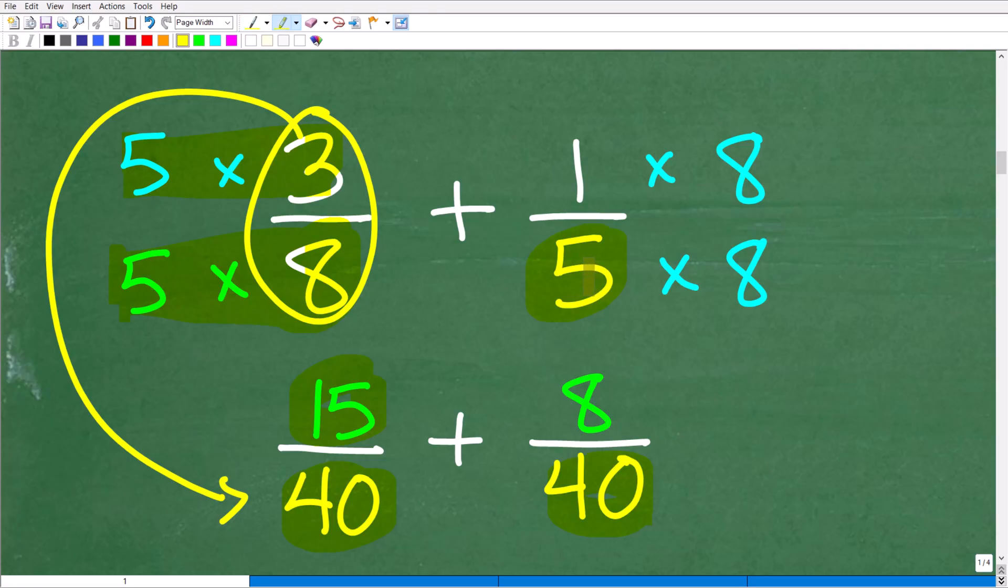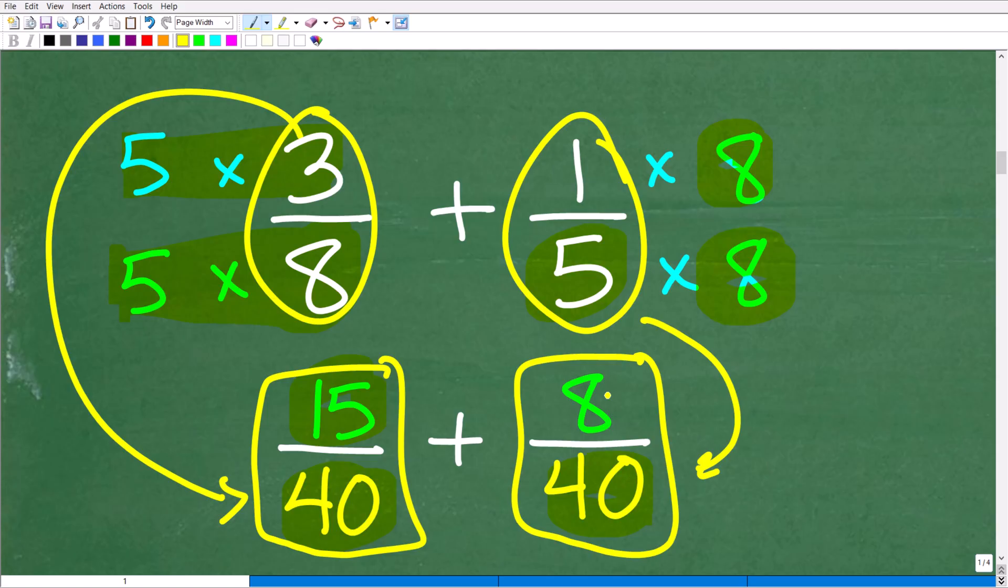How about this one here? To change a 5 into a 40, just multiply it by 8. We're also going to have to multiply the numerator by 8. So we're changing this one-fifth into the fraction 8 over 40. These fractions here are equivalent to our original problem, but the great thing about these fractions is now they have the same denominator, the lowest common denominator, which is 40.